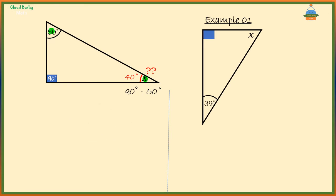So let's look at an example. In this right triangle, we want to find the angle marked x. x is equal to 90 minus 39 degrees. That should be 51 degrees.